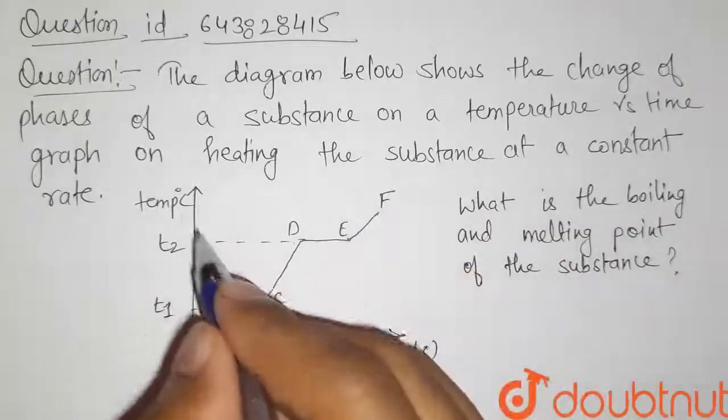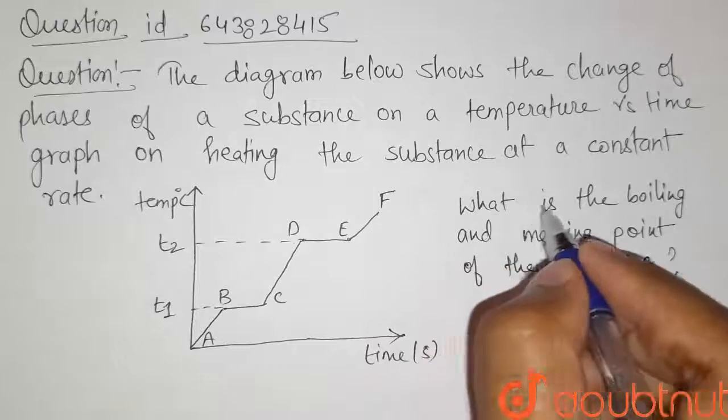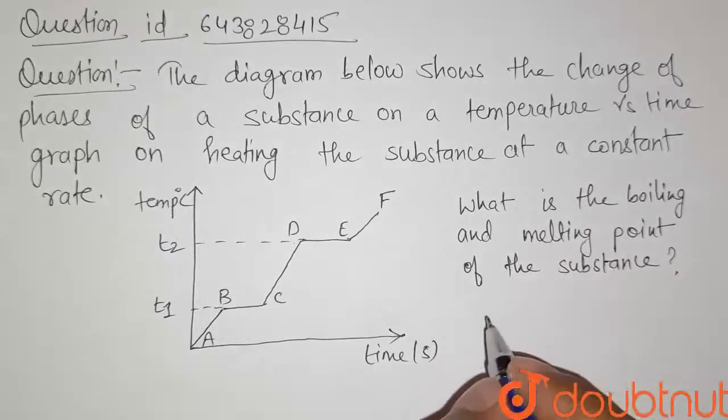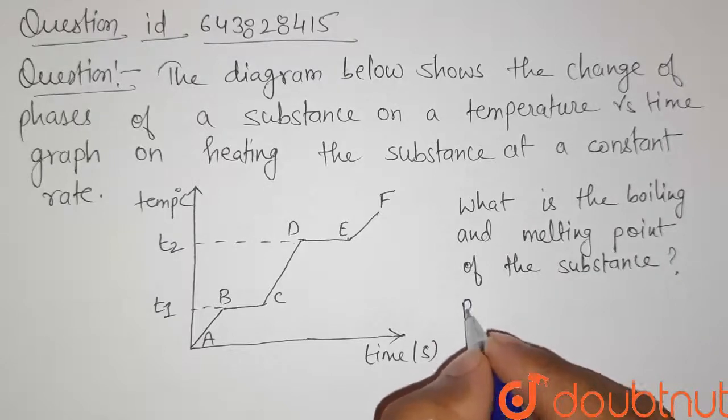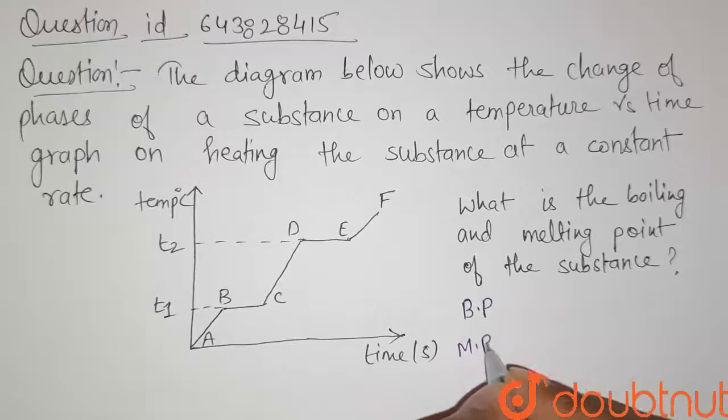On heating the substance at a constant rate, here we are heating a substance with constant rate. What is the boiling and melting point of the substance? So here we have to find the boiling point that is BP and melting point that is MP.